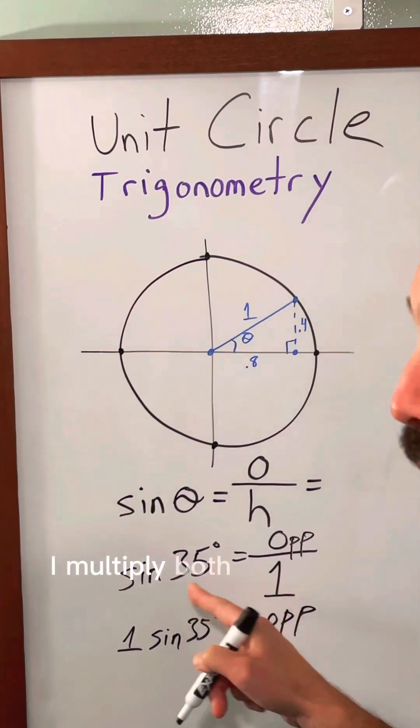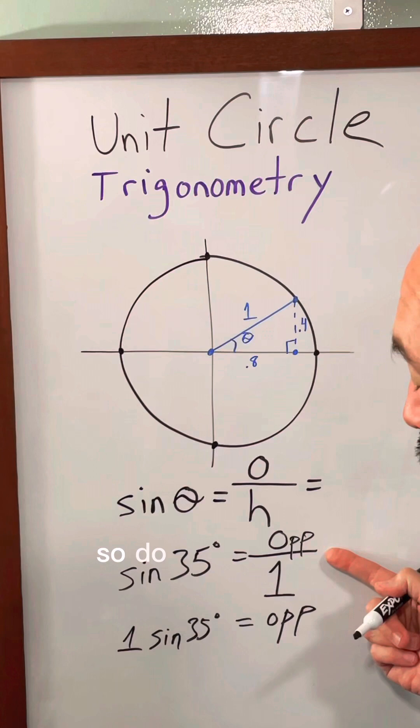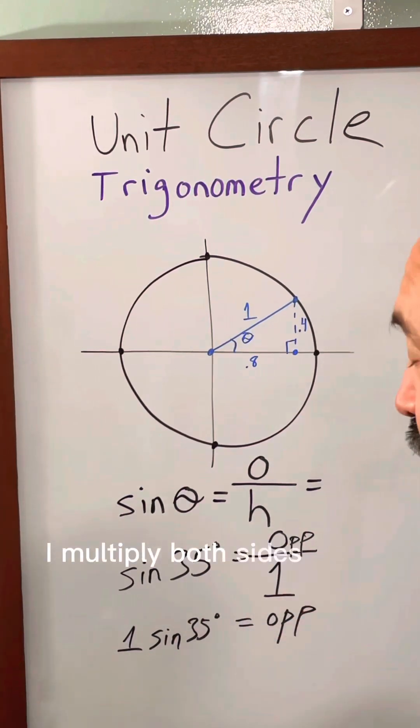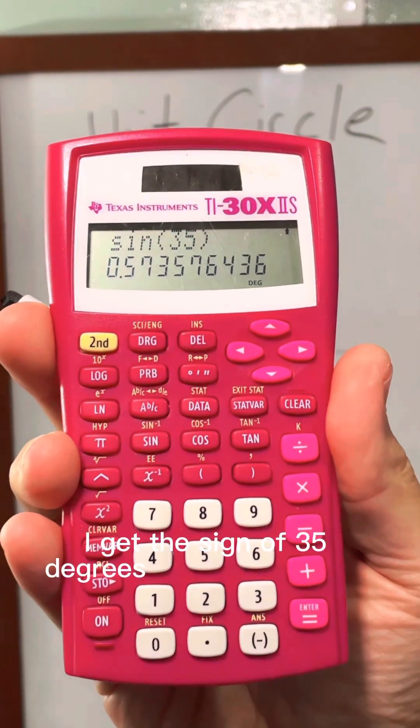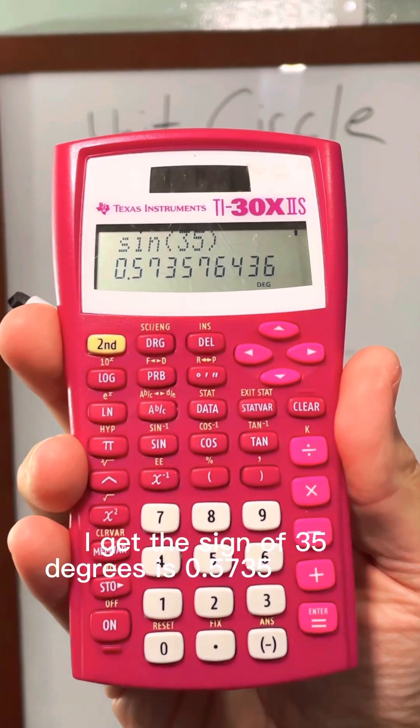I multiply both sides by 1 because this is being divided by 1. So to do the inverse operation I multiply both sides by 1. Okay so now I'm going to type it in. I get the sine of 35 degrees is 0.5735 and so on.